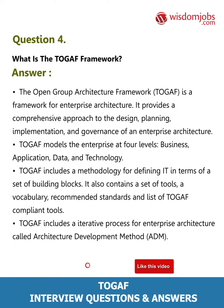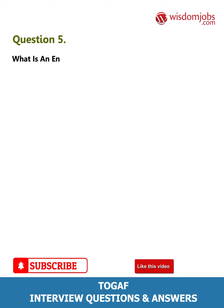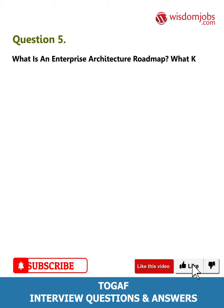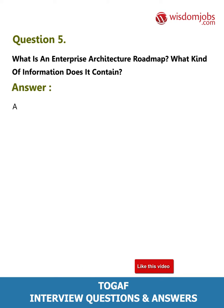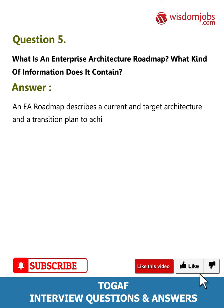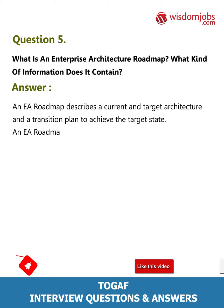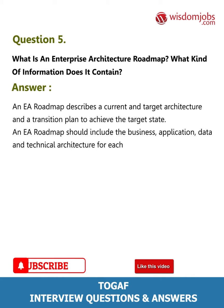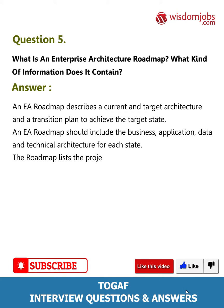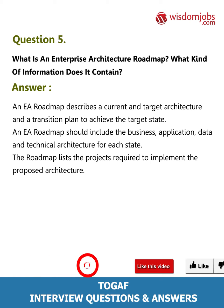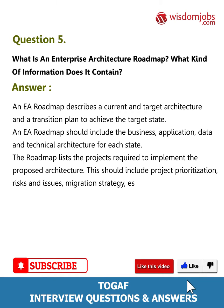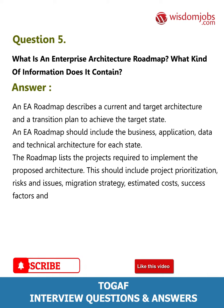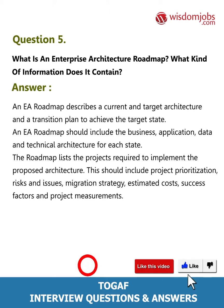Question 5: What is an enterprise architecture roadmap and what kind of information does it contain? An EA roadmap describes a current and target architecture and a transition plan to achieve the target state. An EA roadmap should include the business, application, data, and technical architecture for each state. The roadmap lists the projects required to implement the proposed architecture. This should include project prioritization, risks and issues, migration strategy, estimated costs, success factors, and project measurements.